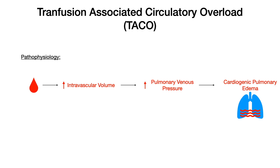The pathophysiology in TACO is really not that complex. Transfusion increases volume, volume increases pulmonary venous pressure, and that leads to cardiogenic pulmonary edema.